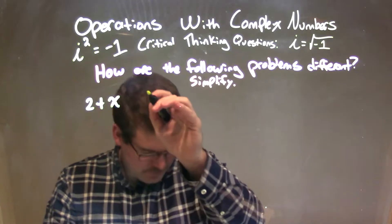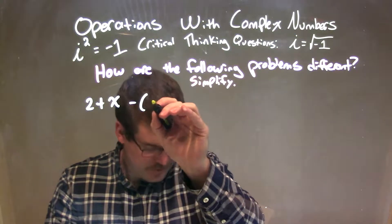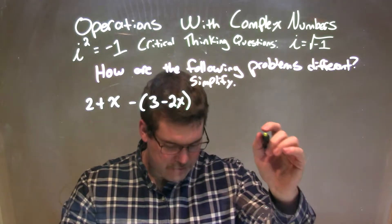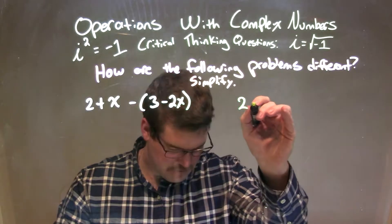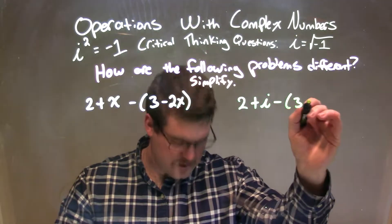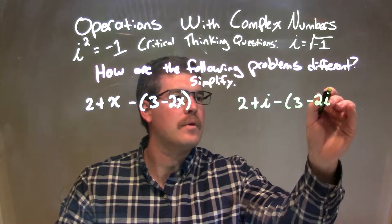2 plus x minus 3 minus 2x. And the other problem is 2 plus i minus 3 minus 2i.